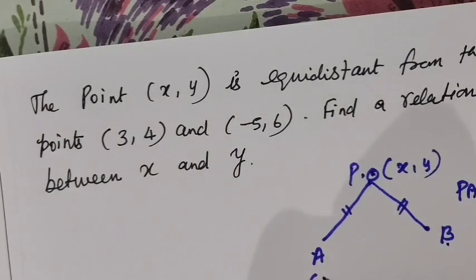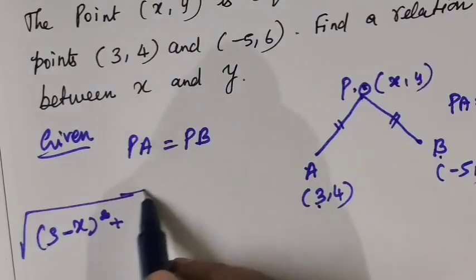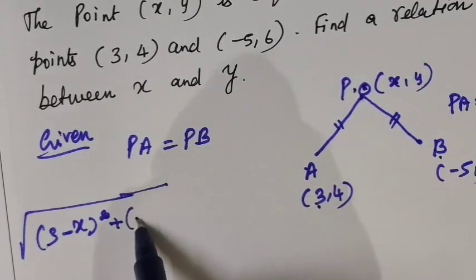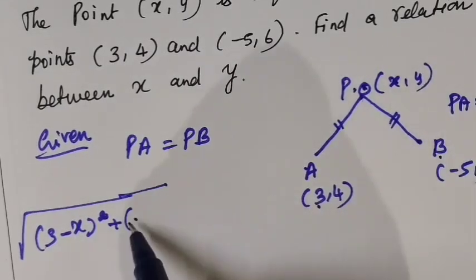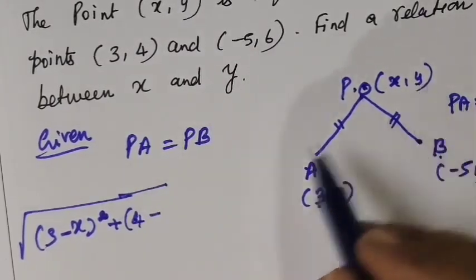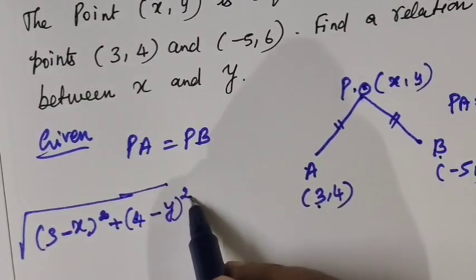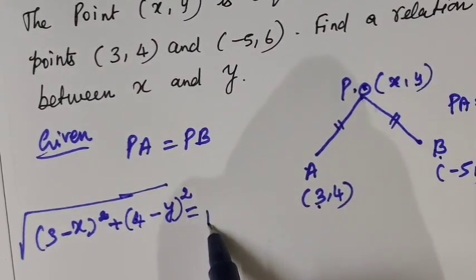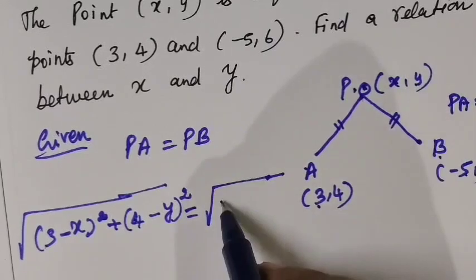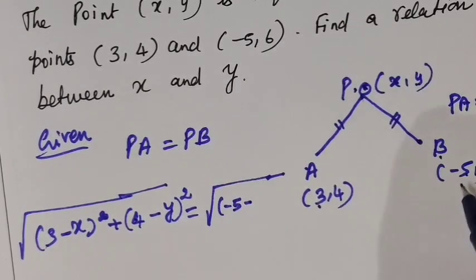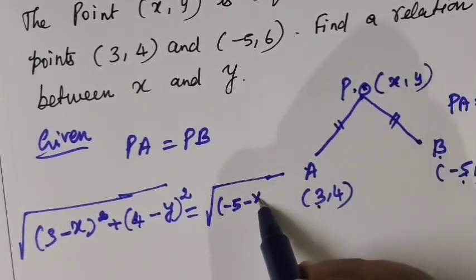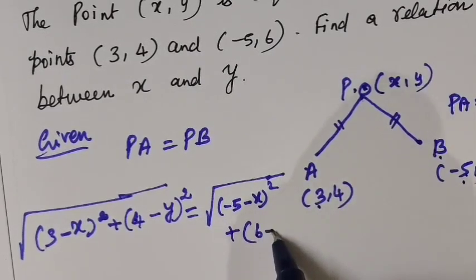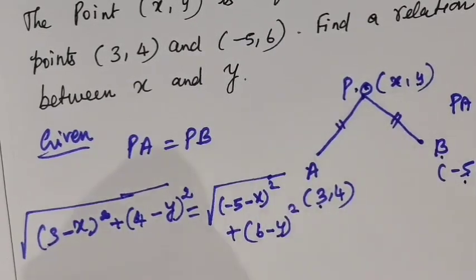What is given? A value is 3, 4. y2 minus y1 whole square. Then equal to root of, this is how? x2 minus x1 whole square. So y2 minus y1 whole square. 2 sides, root cancel.